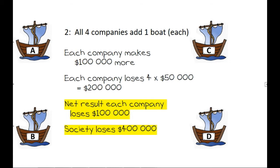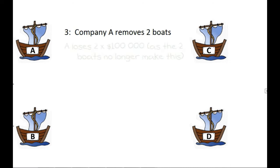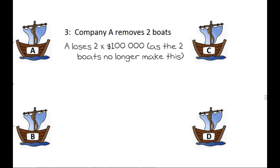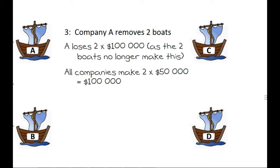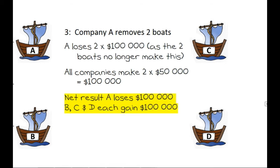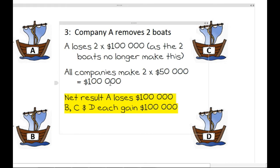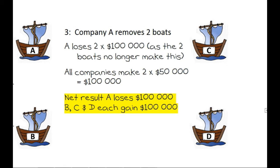That's not good. Question three: what if Company A removes two boats? A will lose $200,000 as it no longer makes that money on the boats it used to have. However, all companies will now have more fish available, taking less time and less effort, and so make more money — $100,000, $50,000 for each boat. The net result: A loses $100,000 (the $200,000 loss and $100,000 gain), while B, C, and D each gain $100,000, and the net result for society is a gain of $200,000.